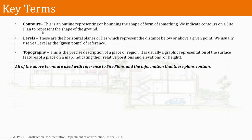A few key terms covered in this lesson. Contours are the outline or bounding of the shape or form of something — used on site plans to represent the shape of the ground. Levels are the horizontal planes or lines representing the distance below or above a given point, typically sea level. Topography is a description of a place or region — a graphic representation of the surface features on a map, indicating relative positions and elevations. All of these terms relate to site plans and the information on them.